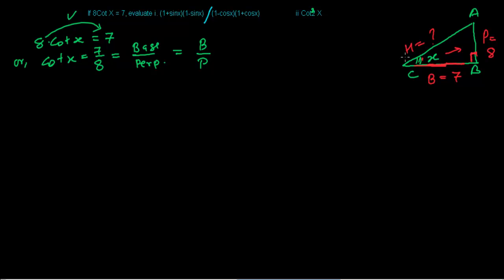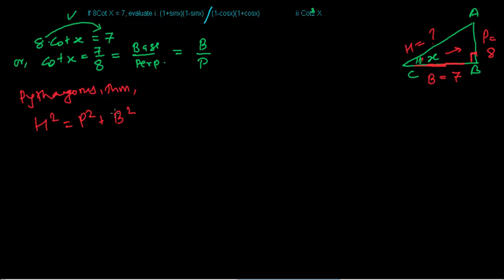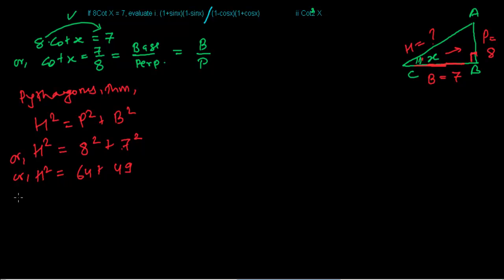Now we need to find the hypotenuse. We use the Pythagorean theorem: h² = p² + b², meaning the square of the hypotenuse equals the sum of the squares of the perpendicular and the base. So h² = 8² + 7².